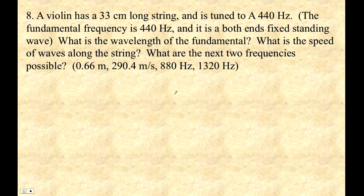A violin has a 33 centimeter long string. It's tuned to 440 Hertz. Fundamental frequency is 440. It is a both ends fixed standing wave and that's all string instruments are like that. What is the wavelength of the fundamental? What is the speed of the waves along the string? What are the next two frequencies?